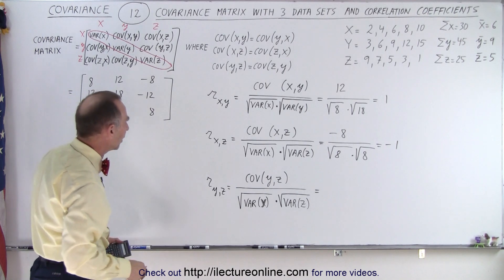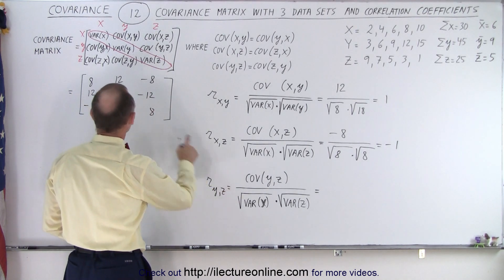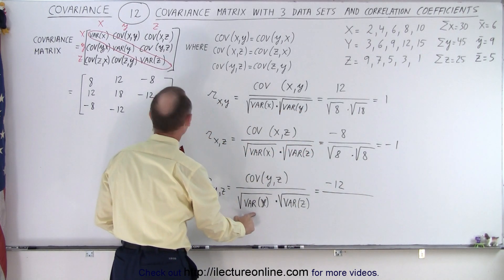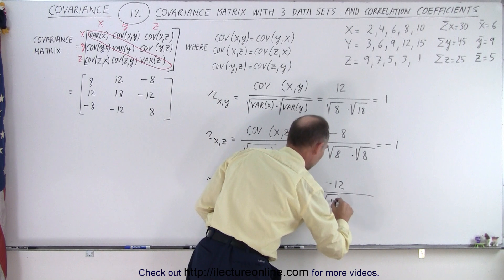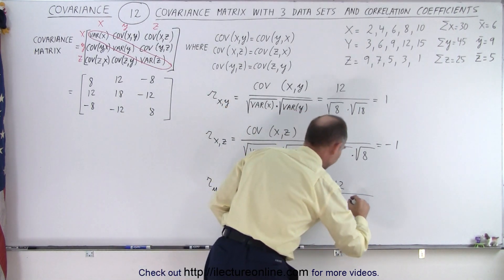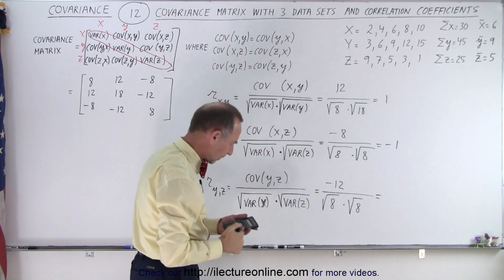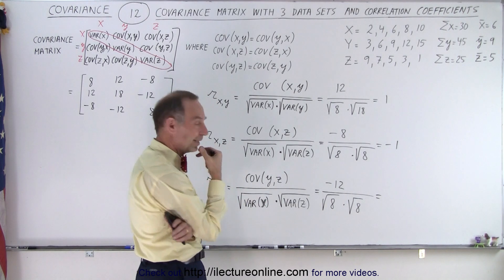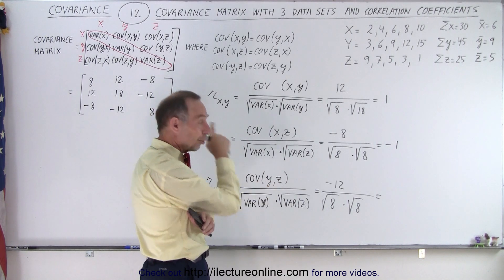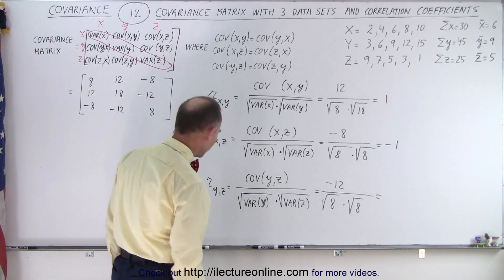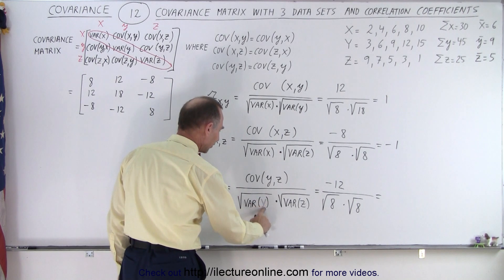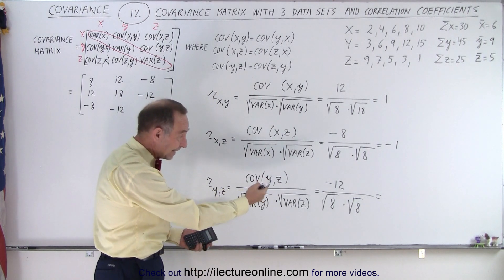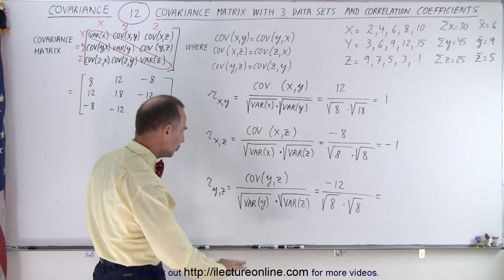Let's take a look at our third correlation coefficient. The covariance of yz — or zy, that's the same number — is negative 12. And we divide that by the variance of y and the variance of z. Well, that would be negative 12 divided by 8 — something is not right here, because I ended up with a magnitude larger than 1, which is impossible. I realized I made a mistake: this should be the variance of y, not the variance of x. How did I know that? Because I would have gotten negative 1.5, which is impossible for a correlation coefficient.